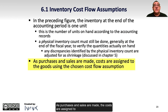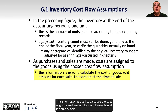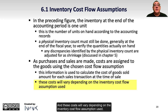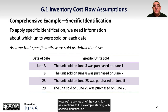As purchases and sales are made, the costs are assigned to goods using the chosen cost flow assumption. This information is used to calculate the cost of goods sold amount for each transaction at the time of sale. These costs will vary depending on the inventory cost flow assumption used, and the cost of sales may also vary depending on when sales occur. Now we'll apply each of the cost flow assumptions to this example, starting with specific identification.